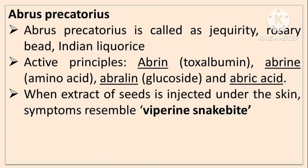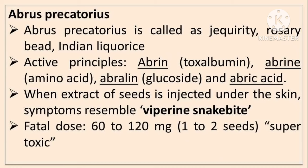When the extract of seed is injected under the skin, the symptoms are similar to Viper snake bite. The fatal dose is 60 to 120 mg, that is 1 to 2 crushed seeds. If the seed is swallowed as it is, then it will not be poisonous. So crushed seeds are poisonous — 60 to 120 mg of active principle Abrin. It is a super toxic substance.